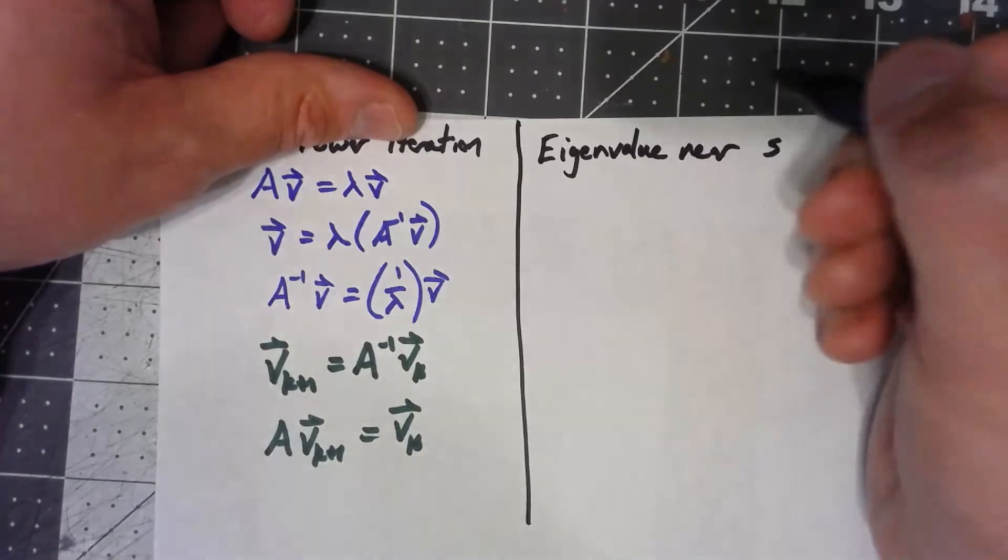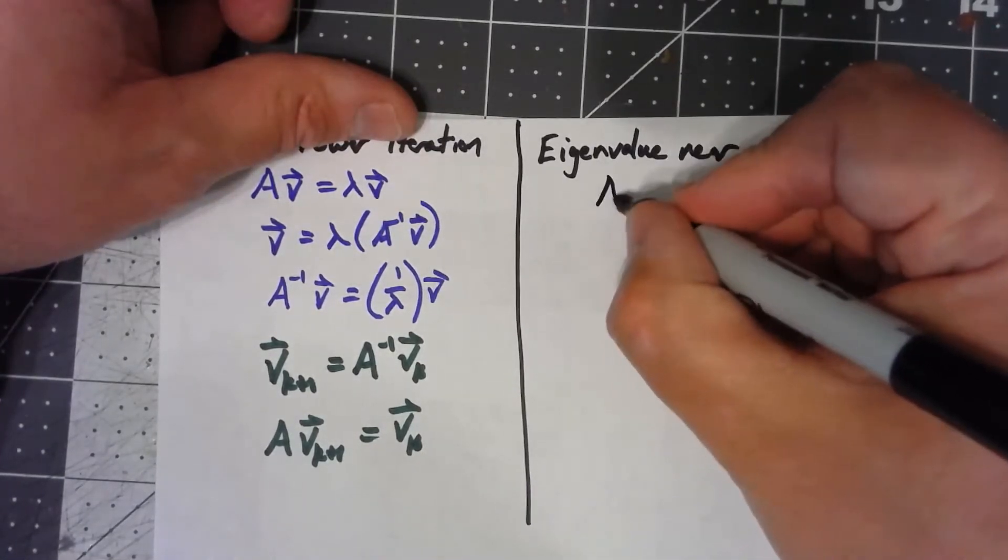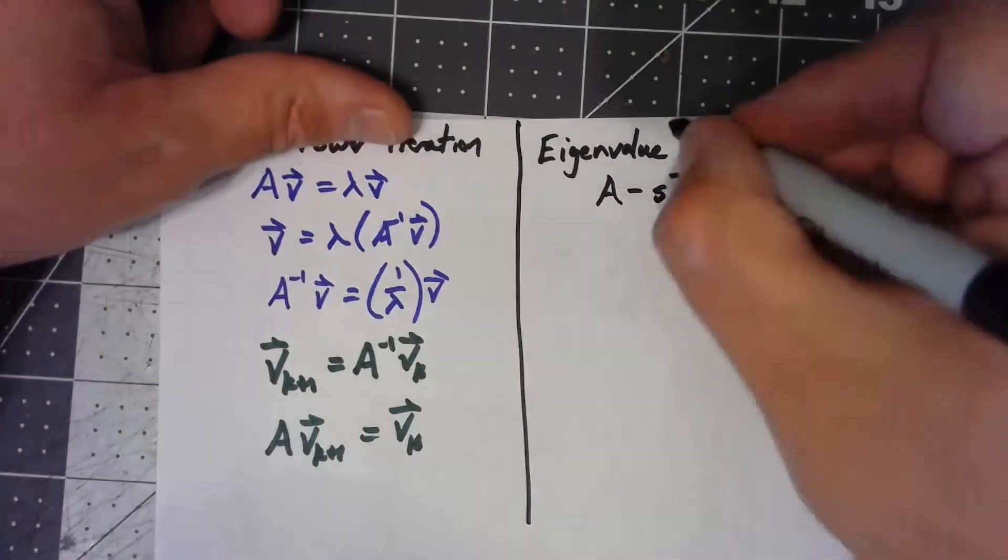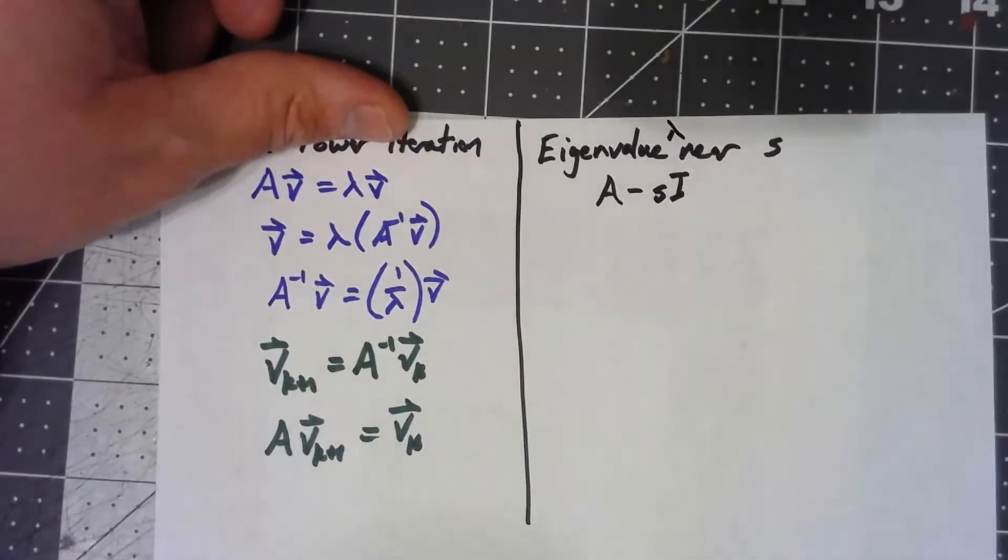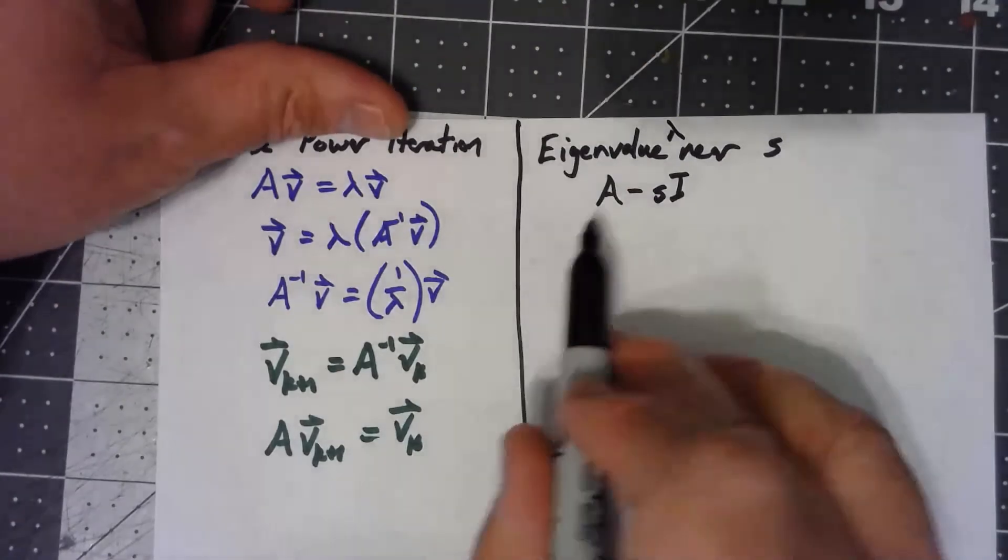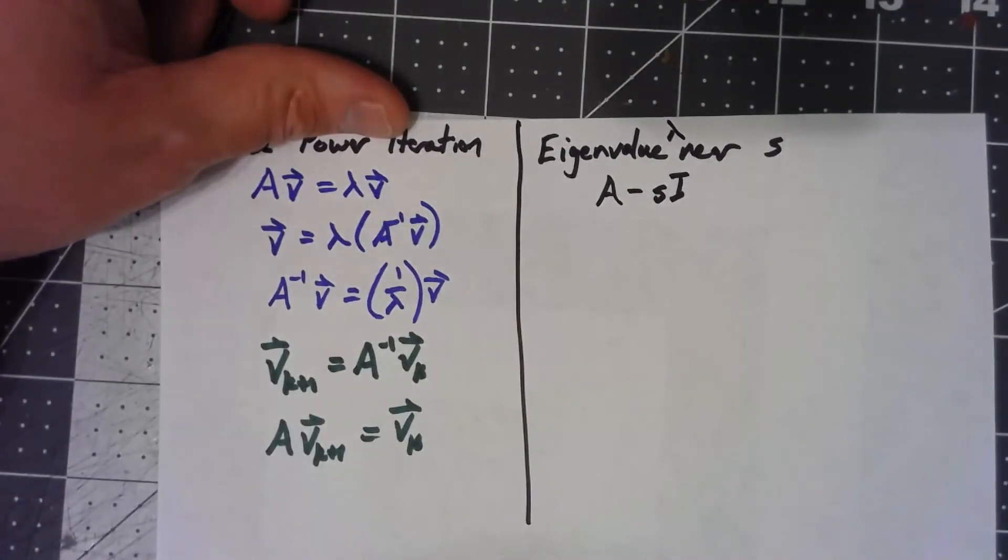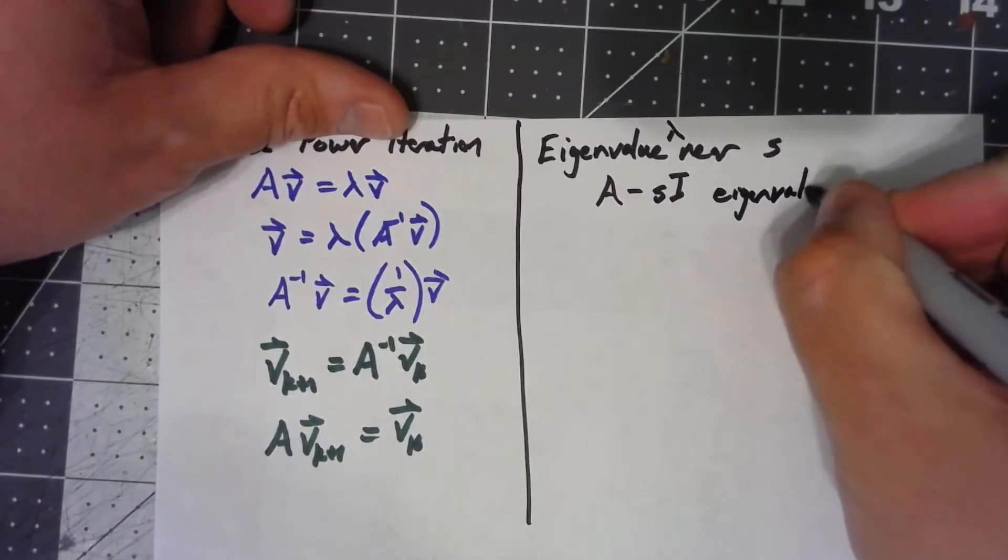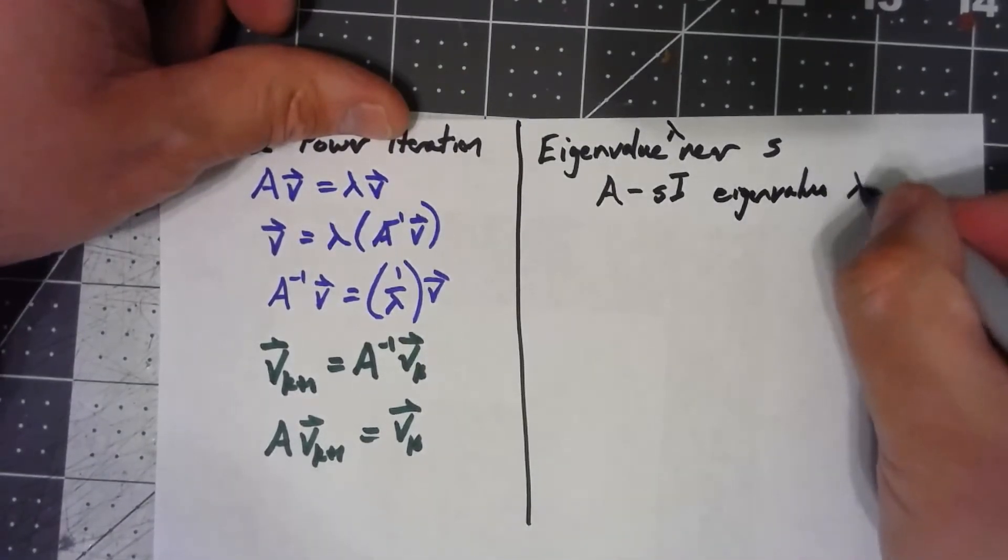what about A minus s I? Let's go ahead and call the eigenvalue lambda, that's near s. If I do A minus s I, that has an eigenvalue of lambda minus s.